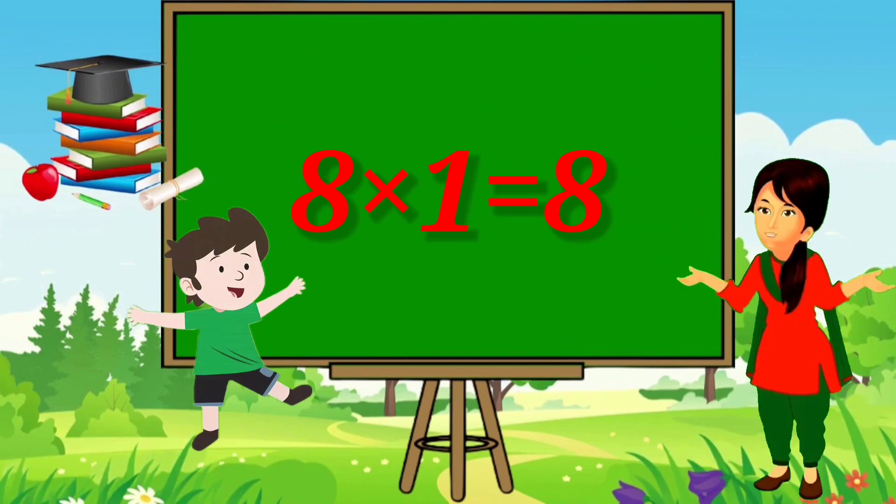8×1=8, 8×2=16, 8×3=24, 8×4=32, 8×5=40, 8×6=48, 8×7=56, 8×8=64, 8×9=72, 8×10=80